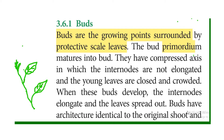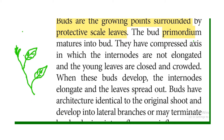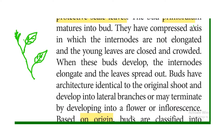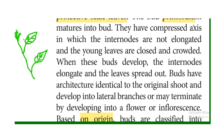Buds have architecture identical to the original shoot. So buds are the original shoot. There are two types of buds. Lateral branches are produced, and floral inflorescence are produced. The inflorescence is a group of flowers on one axis.